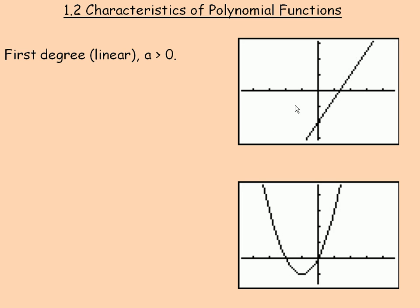The end behavior is it starts in quadrant three and it goes toward quadrant one. This linear function can cross the x-axis in at most one place, so we say there's at most one root. The root would be right there, and a straight line can only cross the x-axis once — it can't cross in more than one place.